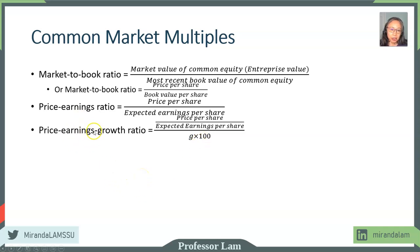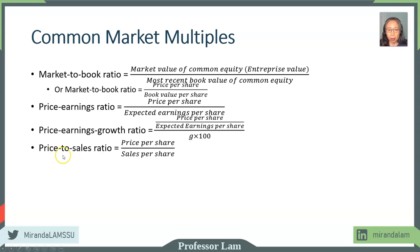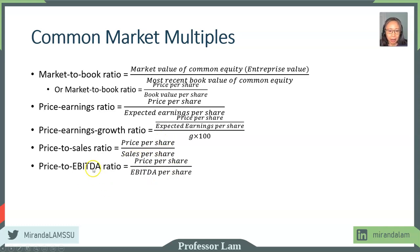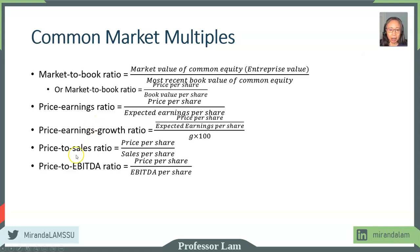In addition to earnings, which is net income, sometimes other variables from the income statement are used to create these multiples. One could be price to sales — so this would be revenue — which is the stock price per share divided by sales or revenues per share. Similarly, we can create a price-to-EBITDA ratio. The reason for that is if a company happens to have negative earnings currently, then the PE ratio makes no sense — you cannot have a negative ratio. So for companies with negative earnings, sometimes analysts may use price to sales or price to EBITDA to estimate the value of the firm.